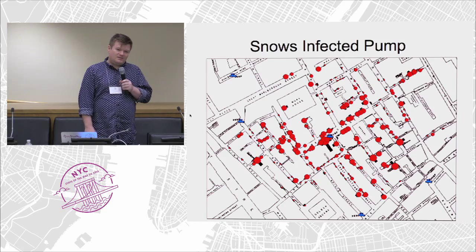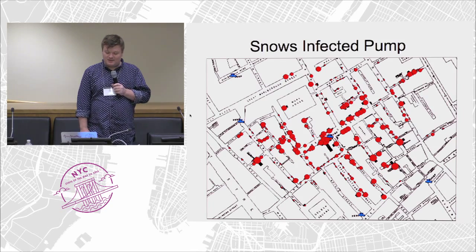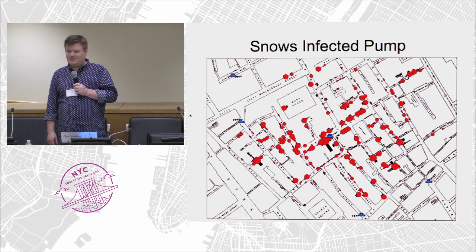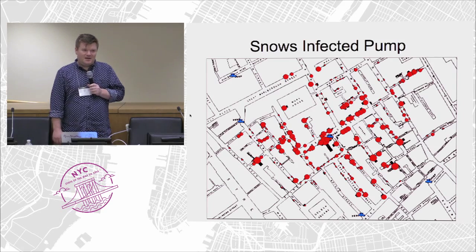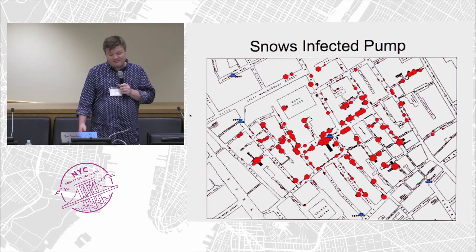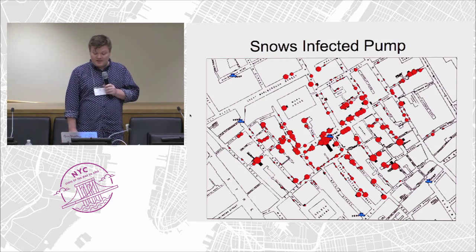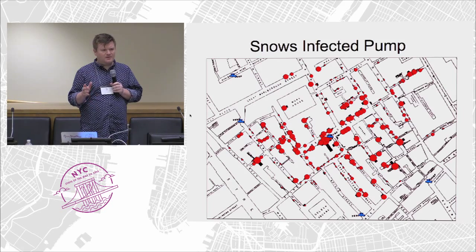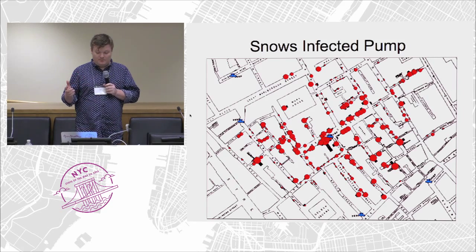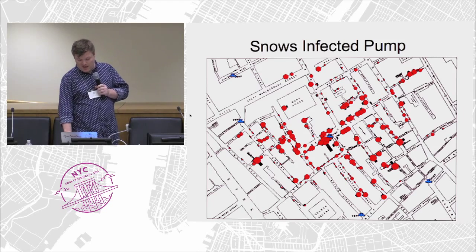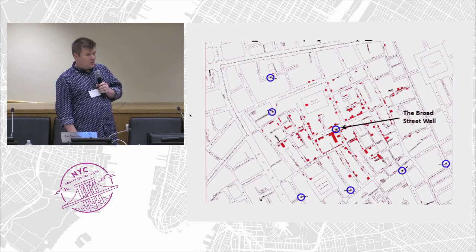This is John Snow's Infected Pump Map. This is an area in London, 1854. John Snow was a doctor in this area during a cholera outbreak. He went around, talked to people, and mapped the locations where people were dying — all the red spots were the casualties. There are bar graphs almost against the street to represent certain houses where all the people within the house died.